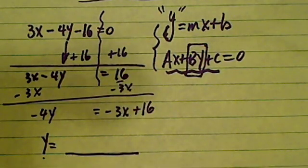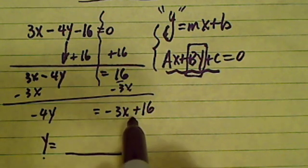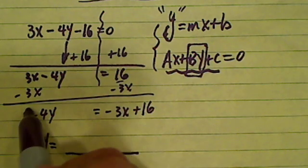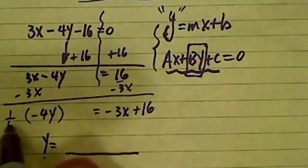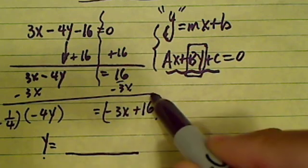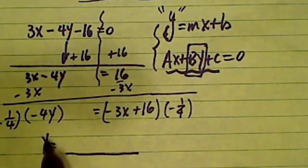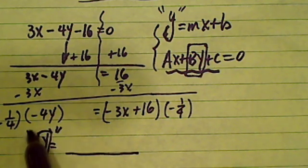My end goal is to have y by itself. So now I'm going to divide by minus 4 everywhere. So another way you can think of it is multiply by minus 1 over 4, because the reciprocal of it. And then on this side I have y all by itself, just like the way it wants.